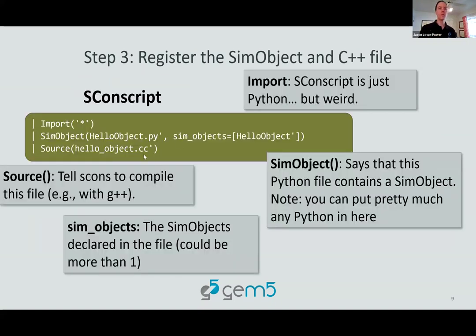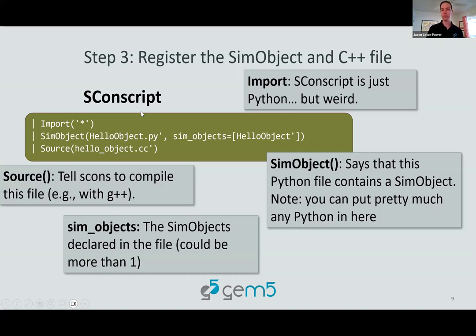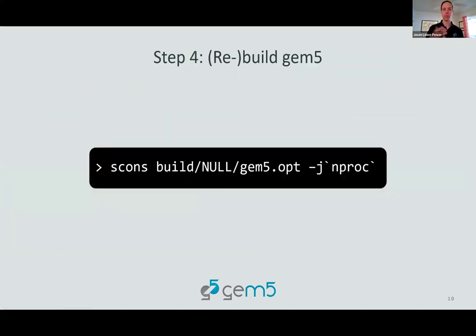A little bit more about the SCons script file: the `import *` is a weird SCons thing. The `SimObject` declaration says there's a Python file called `hello_object.py` that contains this particular SimObject. The `Source` says to compile this CC file. The SimObjects listed are all the SimObjects in that SimObject declaration.